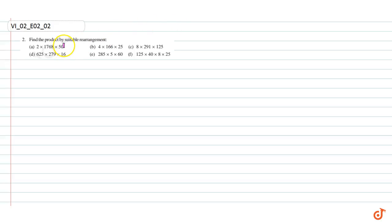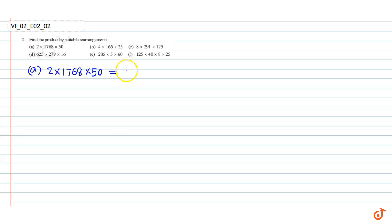In this question we have to find the following products by suitable rearrangement. Part a: 2 into 1768 into 50. Using the commutative property we can write 2 into 50 into 1768.